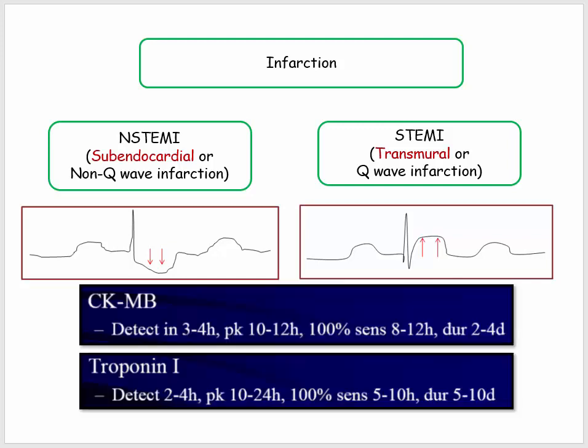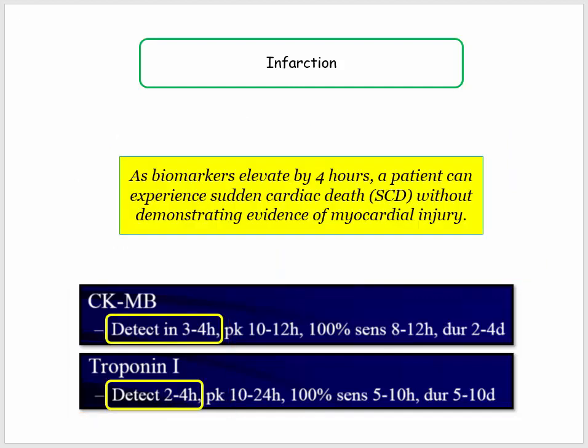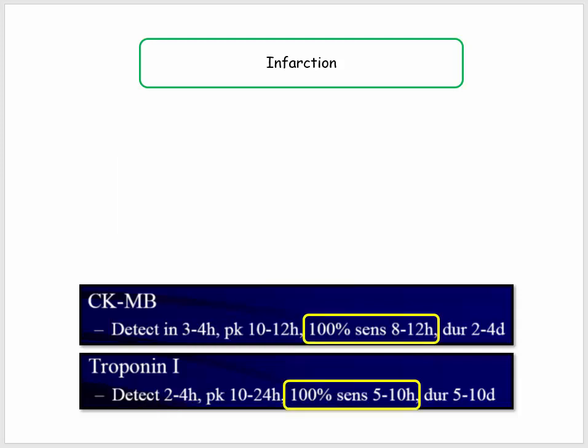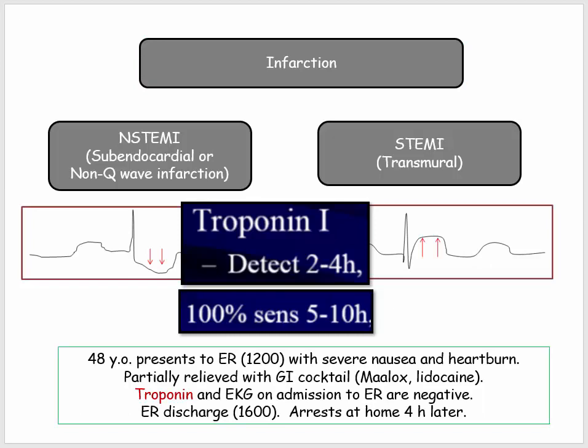There are two clinically relevant biomarkers of myocardial injury: the CKMB fraction and troponin. Pay attention to the fact that they rise pretty early in myocardial injury, usually by four hours. The obvious and immediate implication is that a patient can experience sudden cardiac death without ever demonstrating evidence of myocardial injury. The other big ticket item is the time it takes to reach 100% sensitivity, which is in the 5-10 hour range for troponin.